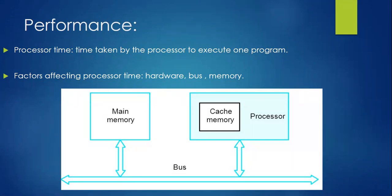Under performance, we'll start the discussion with processor time. Processor time is the time taken by the processor to execute one program. If I want to measure the performance of a student, I can ask questions from the previous class and assess the answers. Similarly, to measure system performance, I give the system a task and measure how fast it executes. Time taken by the processor to execute one complete program is called processor time.